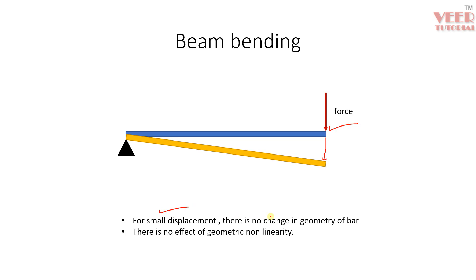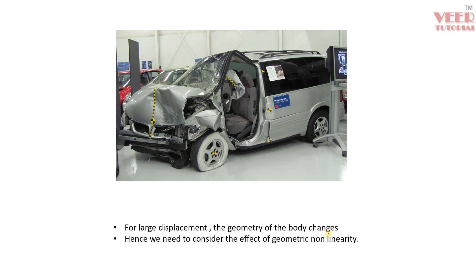In beam bending with small displacement, there is no significant change in the geometry of the beam, so we do not consider geometric nonlinearity. However, in an impact or crash of a vehicle, the displacements are very large — the frontal area shows very large deformation and the geometry of the body changes significantly. In this case, geometric nonlinearity must be considered; otherwise, the analysis will not show the actual bending effect.